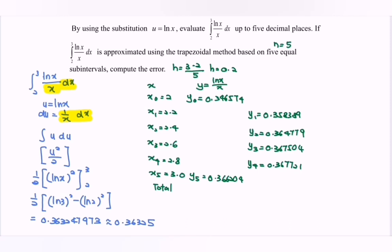Total y₀ and y₅, then substitute into the formula where we have h over 2. So 0.2 over 2 bracket, we have 0.712778, plus 2 multiplied by 1.458394. So finally, we have 0.362957, approximate to 0.36296.